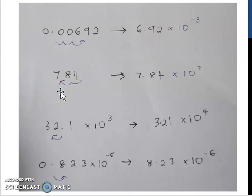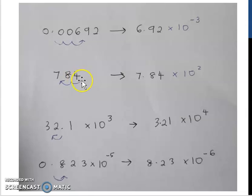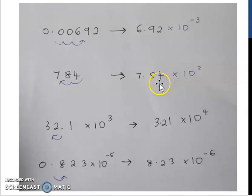Compare to another example — you want to turn it into scientific notation form. You move the decimal point to the left, so the exponent will be positive. You move it 2 times, so you will get 7.84 × 10².